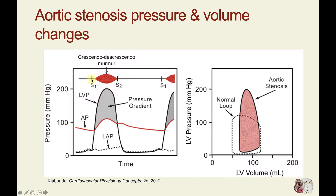Here is S1, where the mitral valve closes. Appearing after the aortic valve opens — a little bit of time after S1 — we have the beginning of the murmur. It will reach a peak pretty much associated with the peak left ventricular pressure. Then, as the pressure gradient starts to fall and the ventricle relaxes, the murmur's intensity reduces and it will end with S2. Once the aortic valve closes, there will be no more systolic ejection murmur.